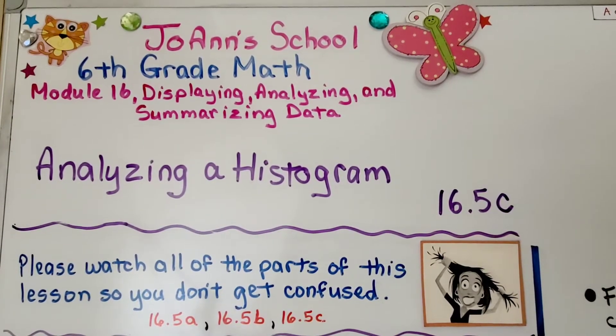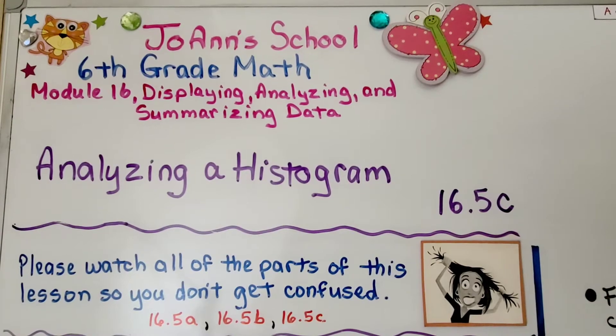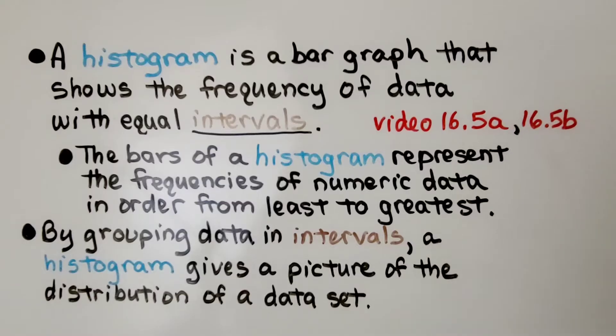Lesson 16.5c Analyzing a Histogram. A histogram is a bar graph that shows the frequency of data with equal intervals. We've learned in the first two parts of this lesson, 16.5a and b, the bars of a histogram represent the frequencies of numeric data in order from least to greatest. And by grouping data in intervals, a histogram gives a picture of the distribution of a data set.